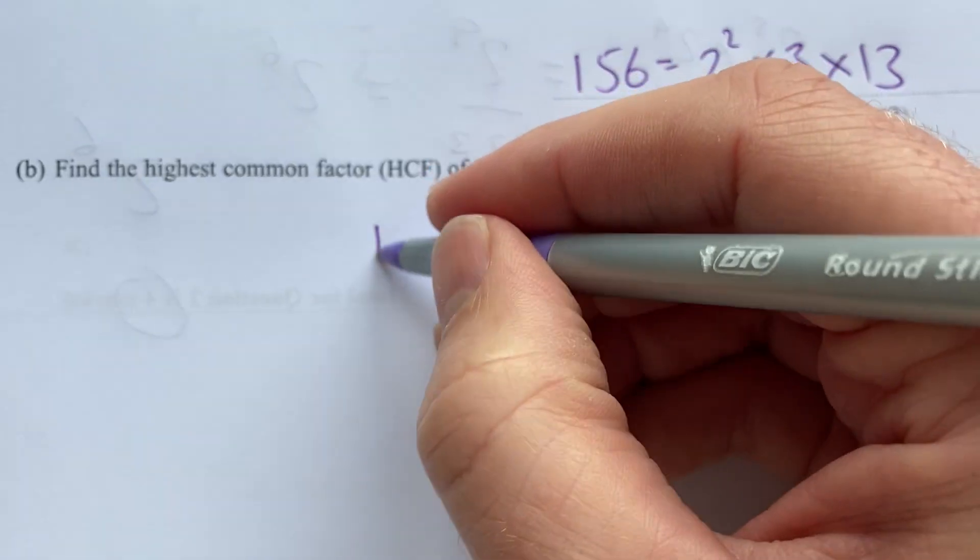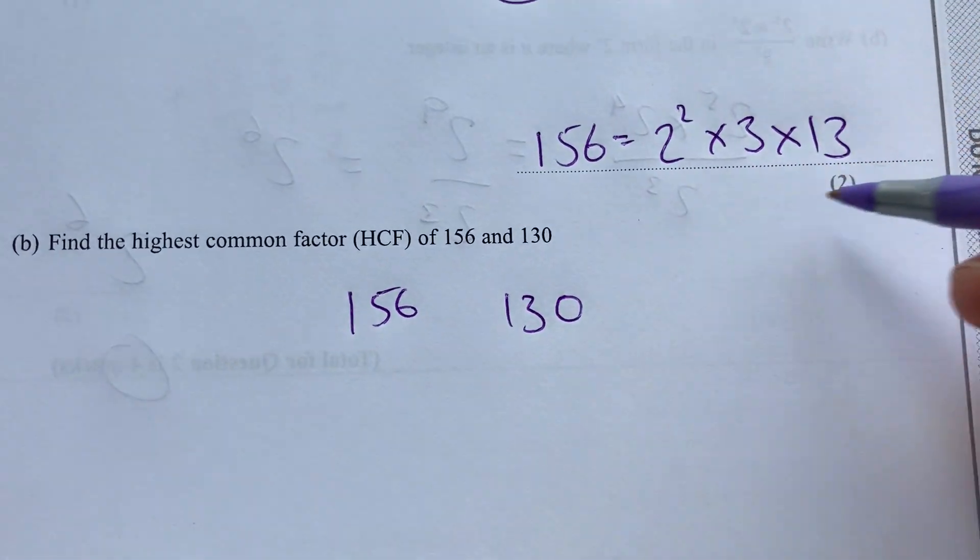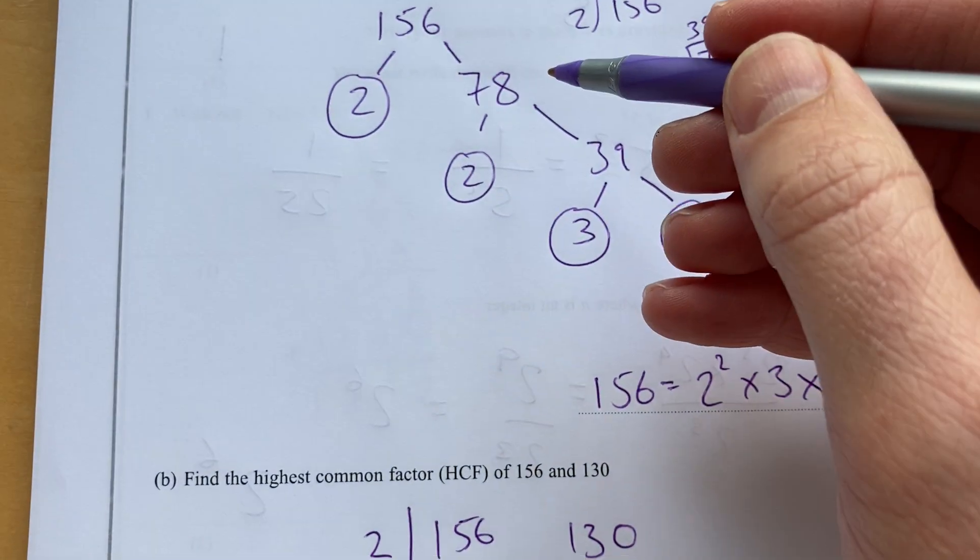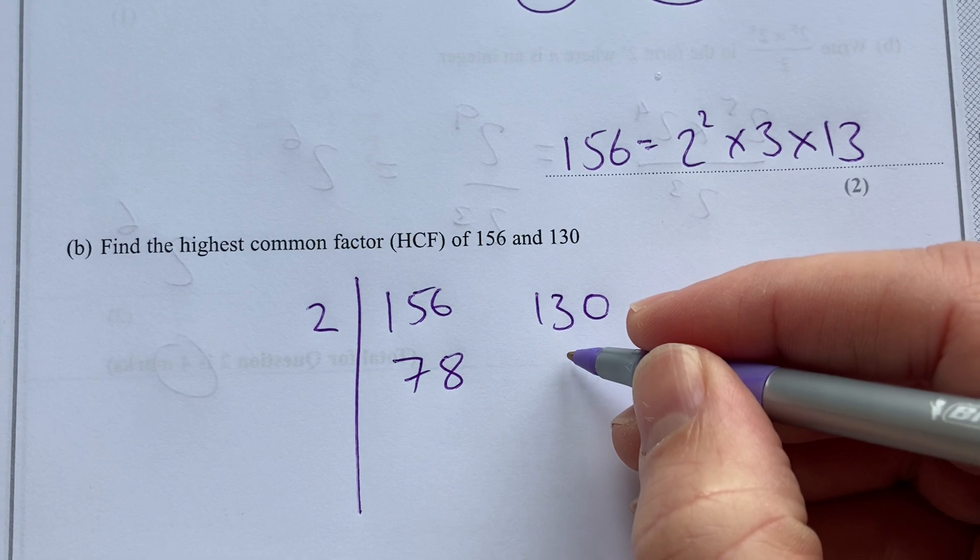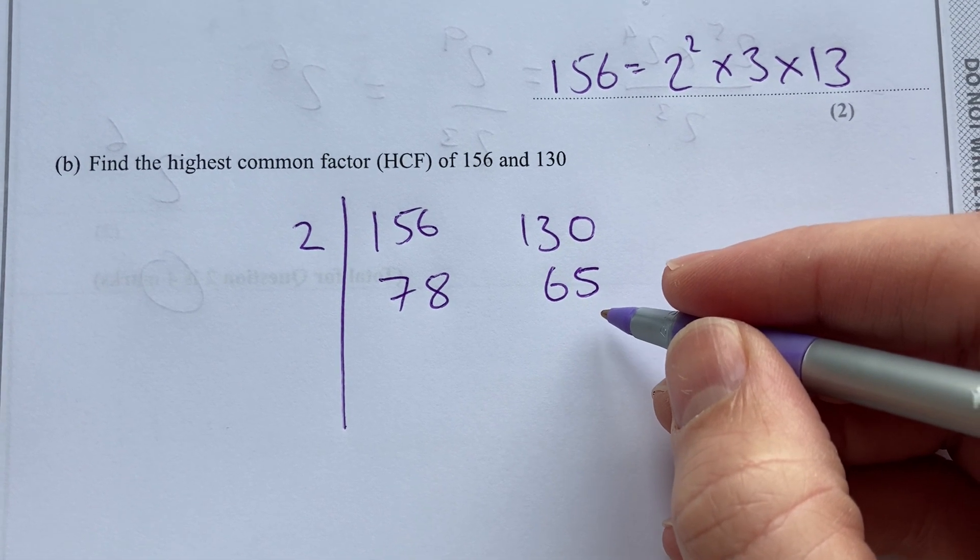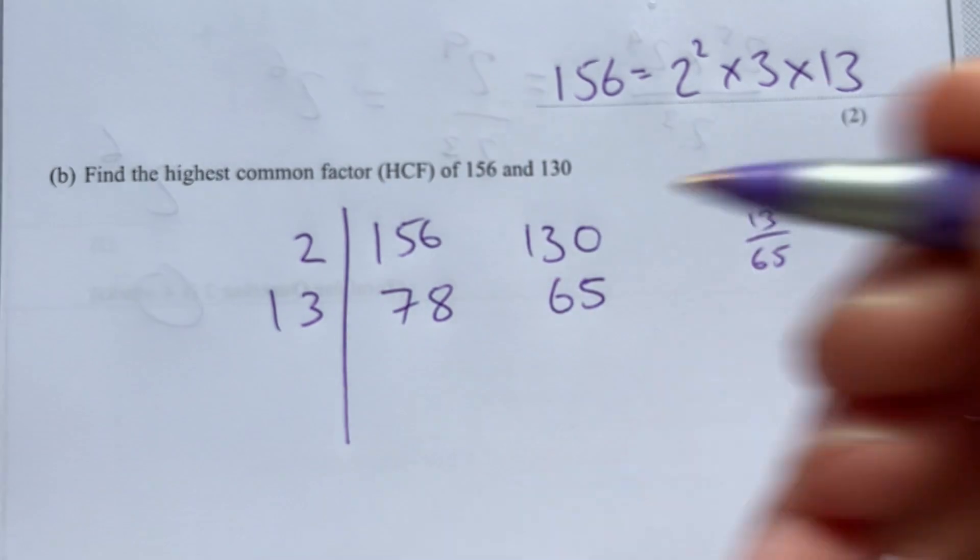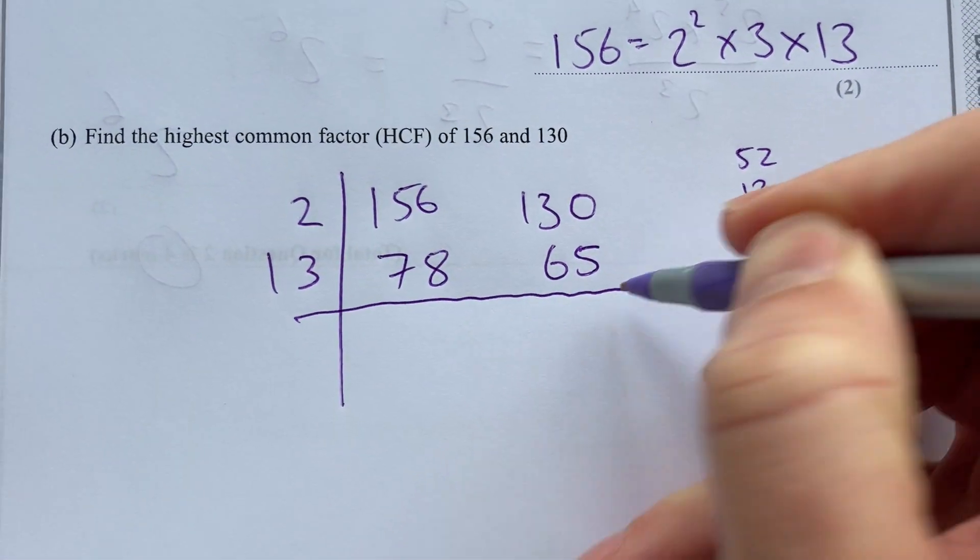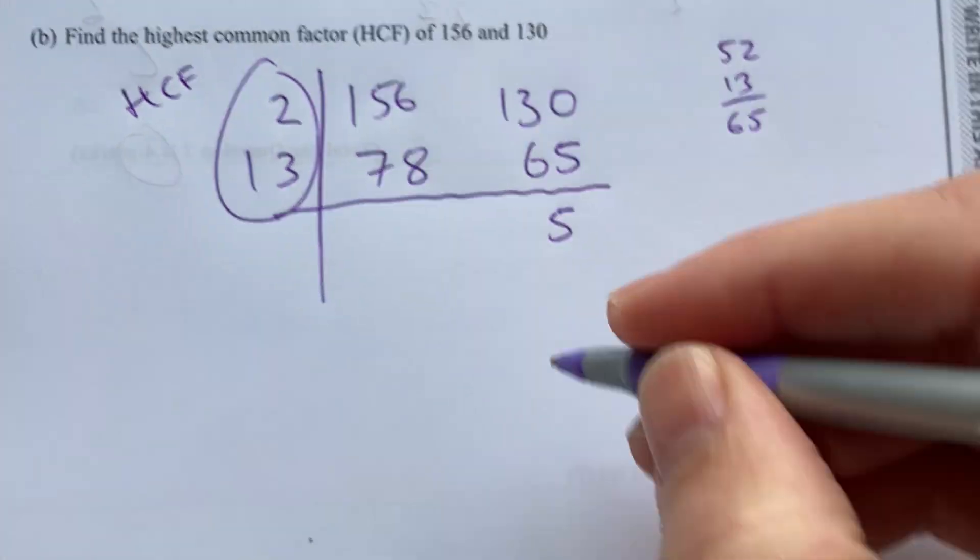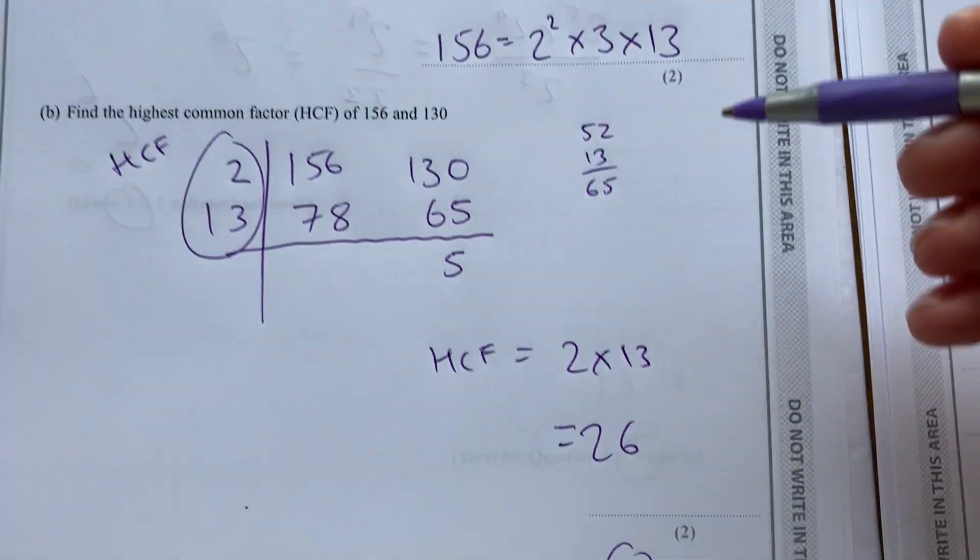Find the highest common factor of 156 and 130. We have 156 there. So if you want to use Venn diagrams or factor trees, I like to use the table method. They're both divisible by 2. 156 we saw earlier was 78. And 130 would be 65. I can now divide that by 13. So the highest common factor is the product of those two numbers. So the highest common factor is 2 times 13, which is 26. Four marks for those two questions.